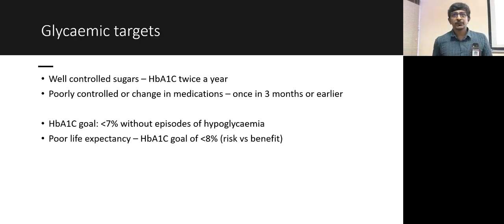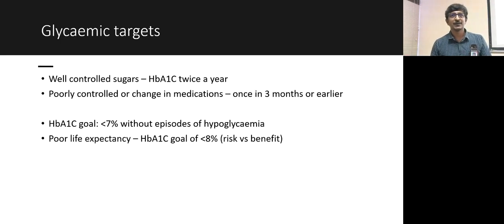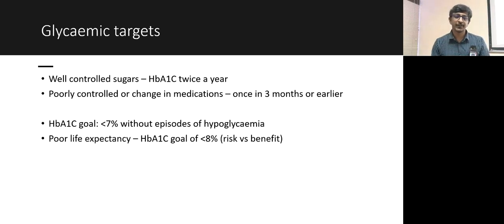Check HbA1c twice a year if sugars are well controlled; more frequently — every three months or sooner — if poorly controlled or medications have been changed. The standard target HbA1c is less than 7% in those without hypoglycemia episodes. For patients with very poor life expectancy — end-stage cancer, severe heart failure on palliative care — an HbA1c target of 8% is appropriate, prioritizing quality of life over medication burden.